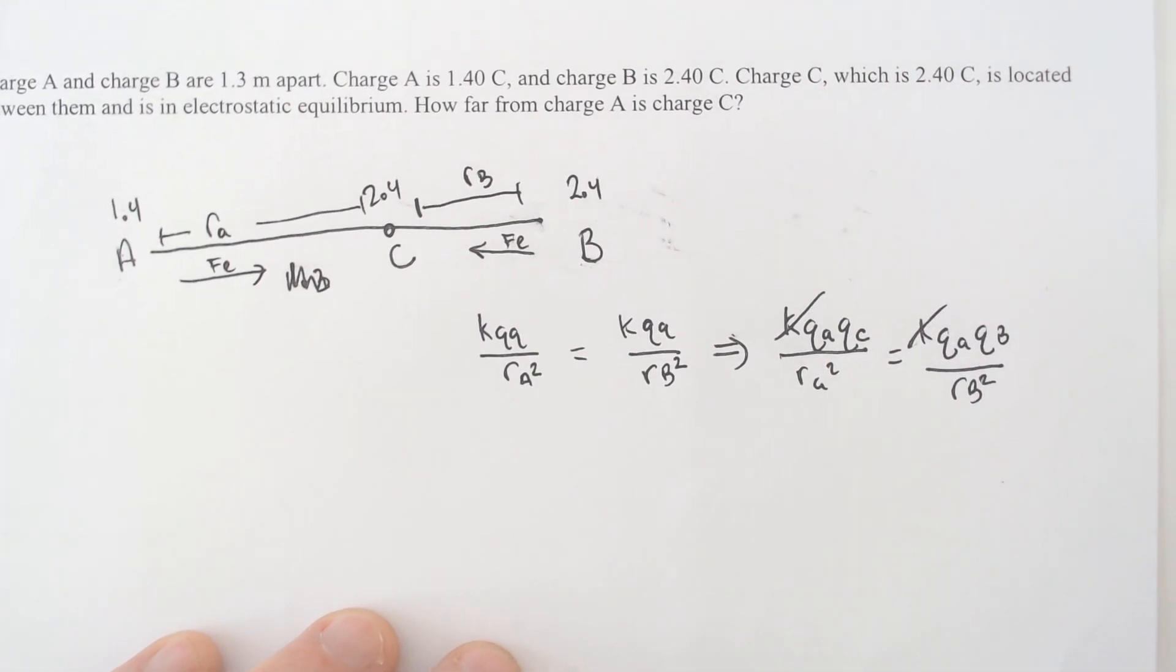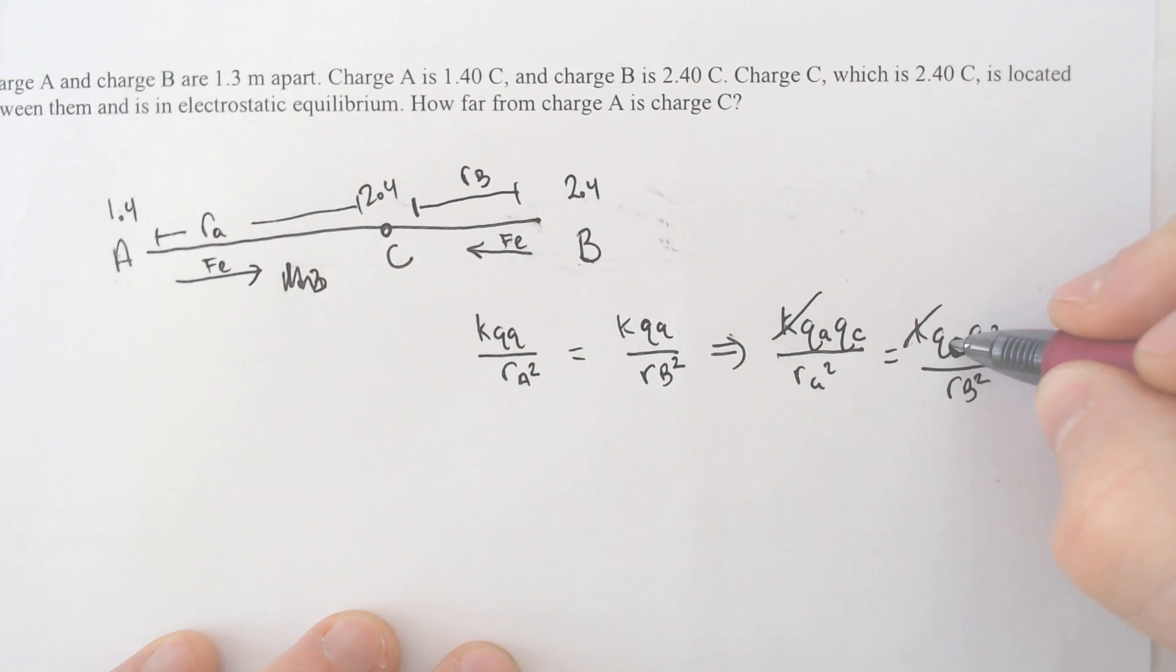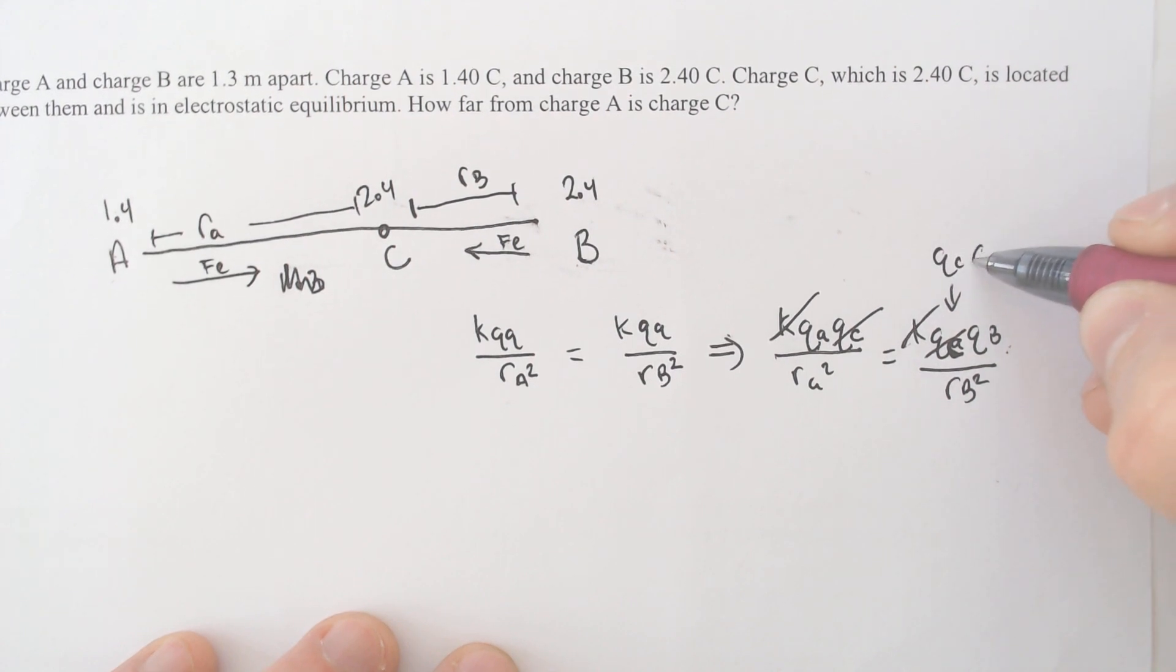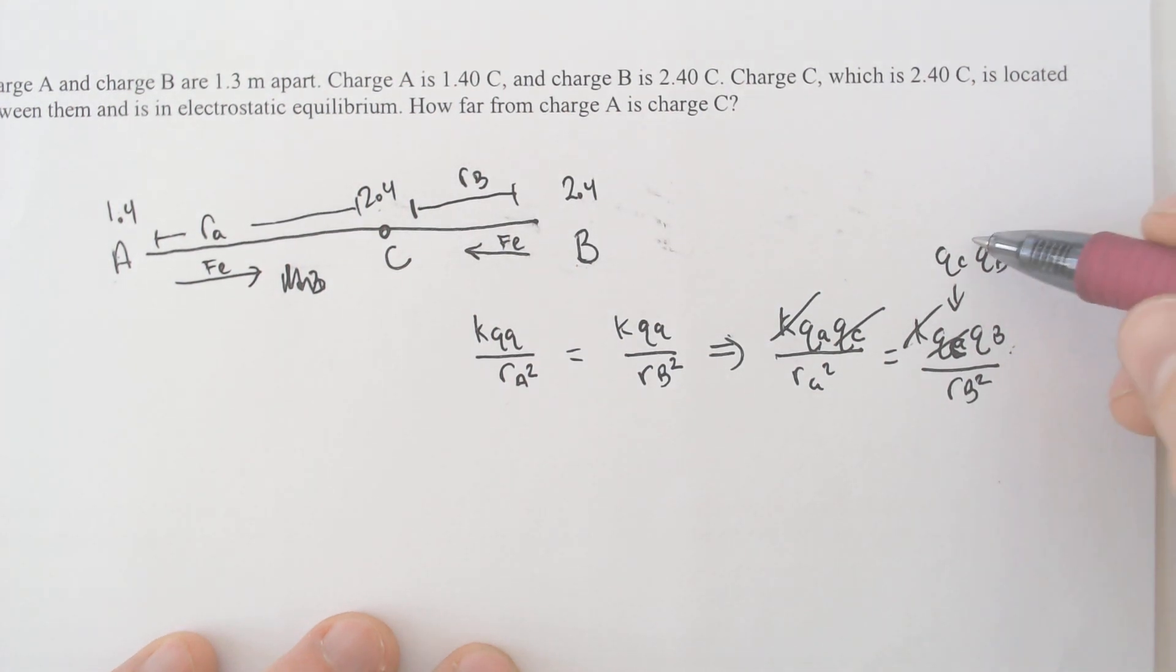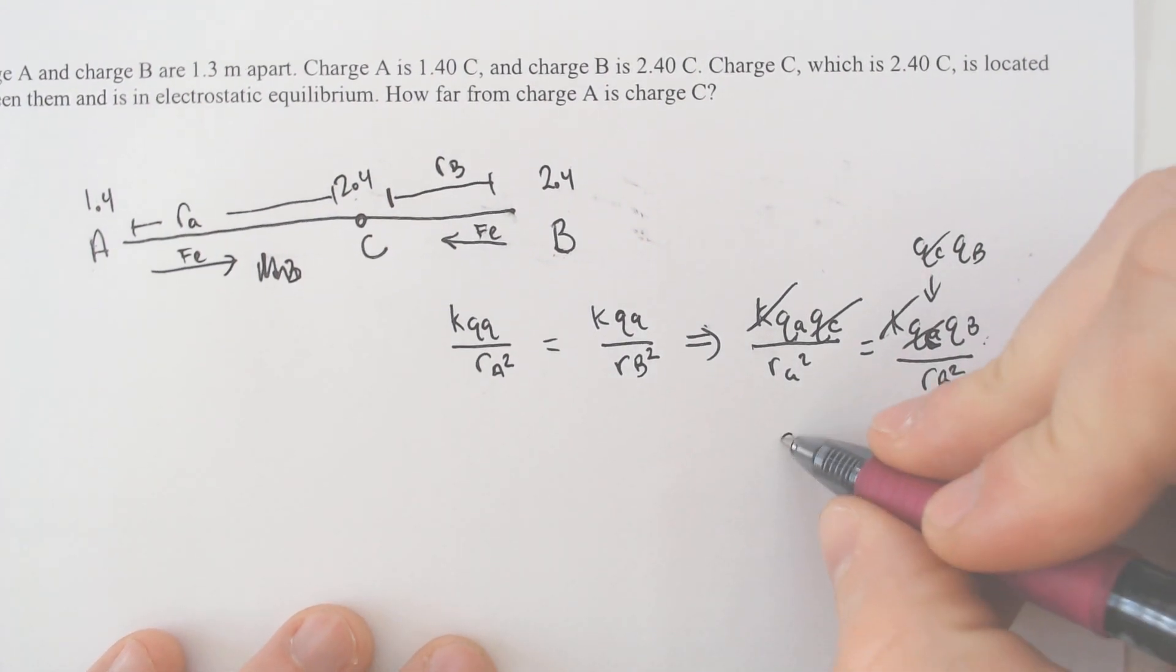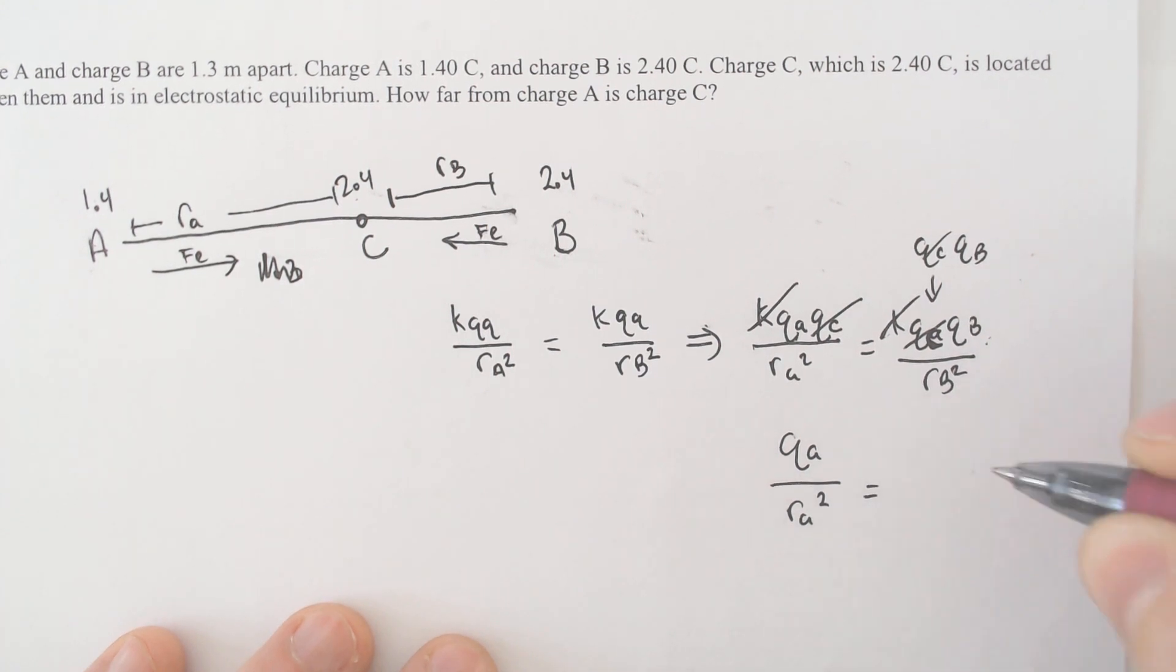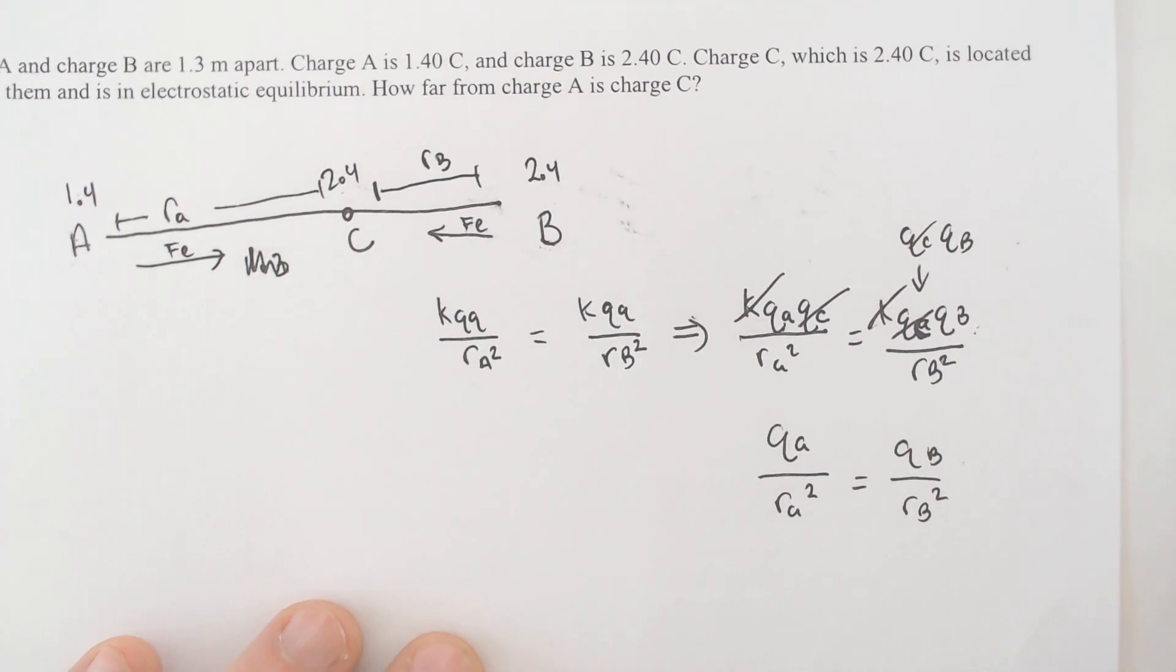A lot of things are going to cancel here. The K's don't matter at all. They're gone. The Q of C is going to cancel. That's gone. And then the only thing you're going to be left with is the Q of A and Q of B. And we are left with Q of A over radius of A squared would equal Q of B radius of B squared which is almost enough to do the problem.